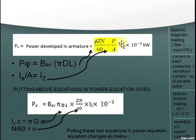Substitute these two equations below into power equation. One of the equation is equation for specific magnetic loading, and other equation is current in each conductor is equal to armature current divided by number of parallel paths. That changes our equation as below. Then again substitute these two small equations that we already know to our power equation.